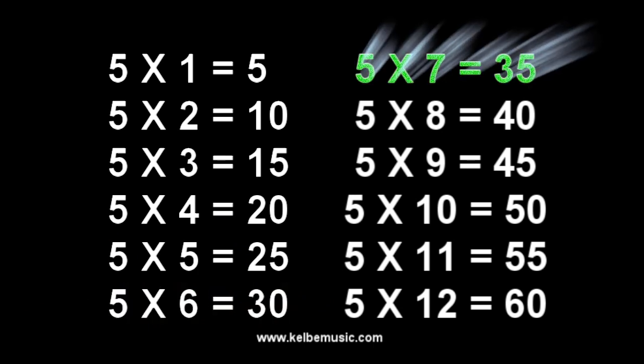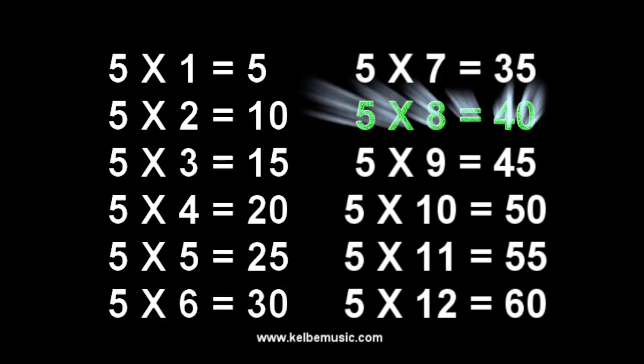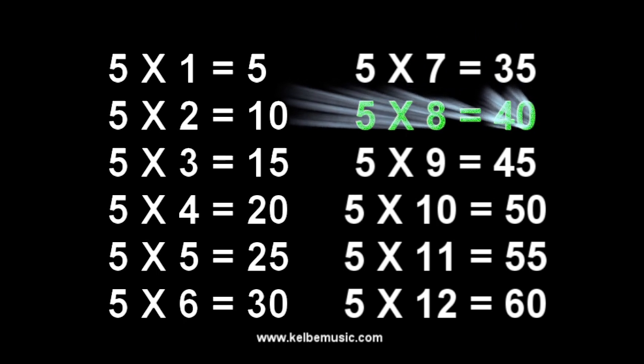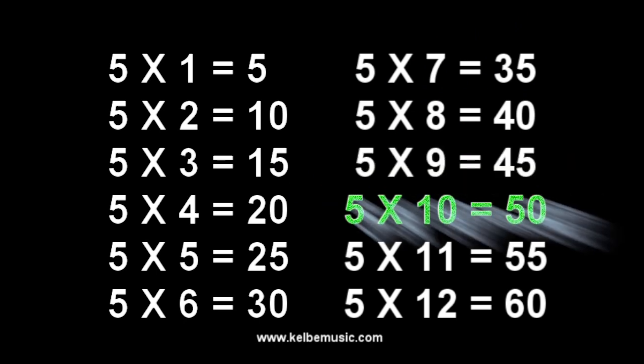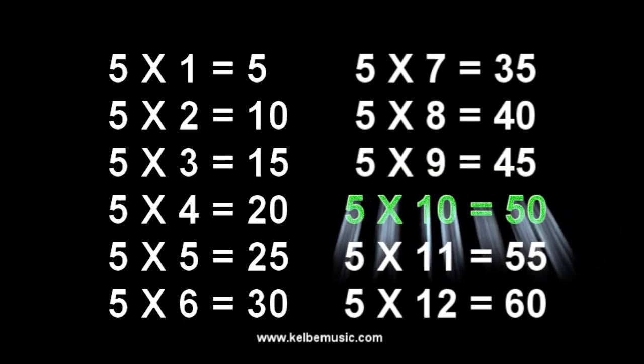5 times 7 is 35, 35. 5 times 8 is 40, 40. 5 times 9 is 45, 45. 5 times 10 is 50, 50.